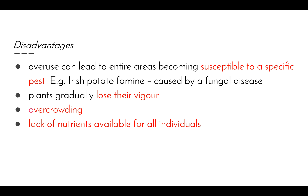Some disadvantages: overuse can lead to entire areas becoming susceptible to a specific pest. This occurred with the Irish potato famine — because there was no real variation among the potato population due to artificial pollination, a fungal disease wiped out nearly the entire population, eliminating the main food source for the Irish people. Additionally, plants gradually lose their vigour, losing the ability to deal with changing conditions, and growing more plants causes overcrowding with a lack of nutrients available for all individuals.